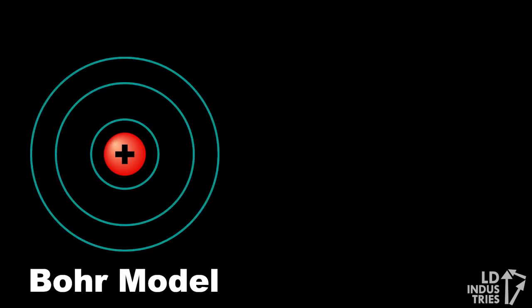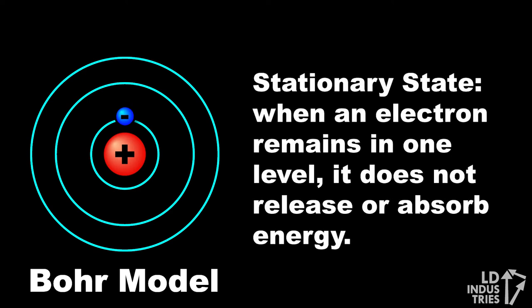Bohr knew that the planetary model couldn't explain it, so he came up with a new model of the atom. Bohr's model had a nucleus and electron orbitals, or energy levels. These energy levels are fixed for a particular atom — they can't change or vary. While the electron is in an energy level, it doesn't emit or absorb light. We say that an electron remaining in one energy level is in a stationary state.